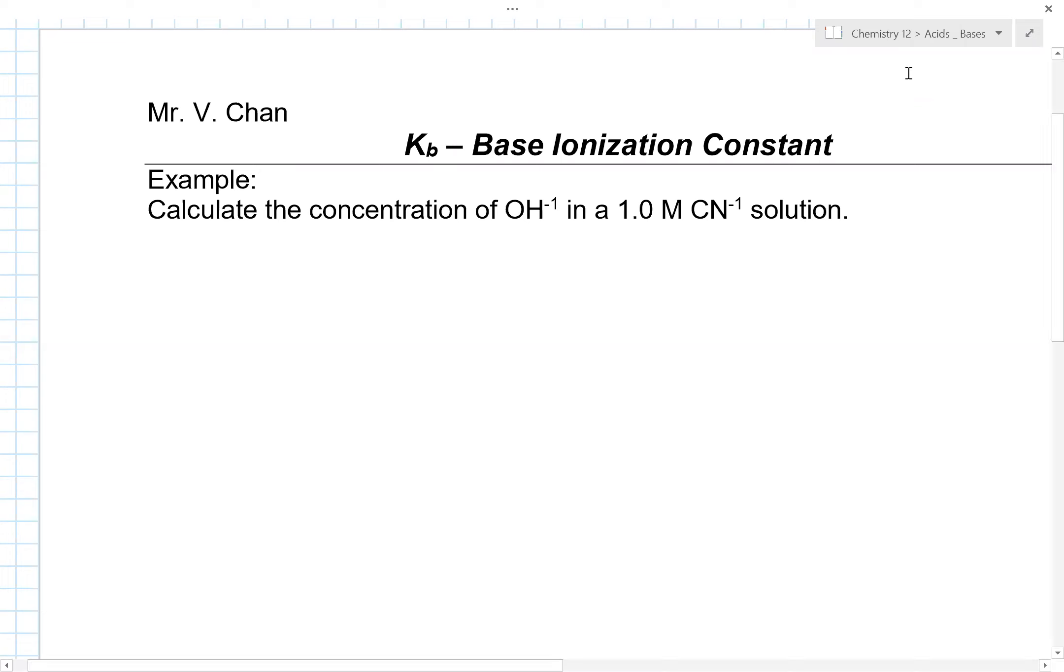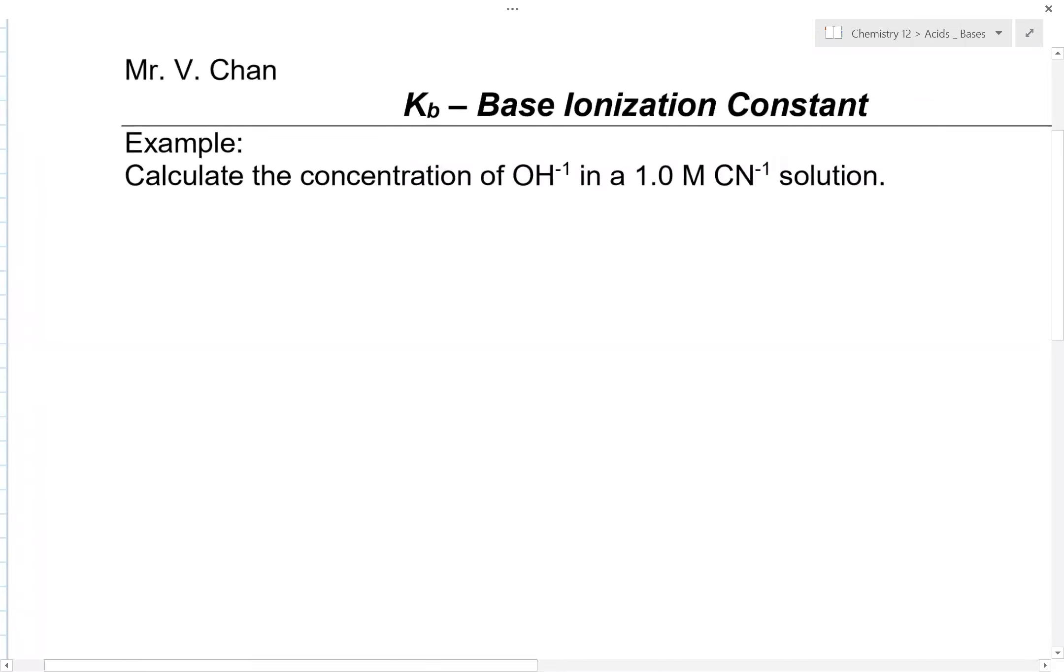So what I wanted to do is show you a calculation of how you would approach a question something to what you see on your screen. So at this point in time it says calculate the concentration of OH⁻¹ in a 1.0 molar CN⁻¹ solution.